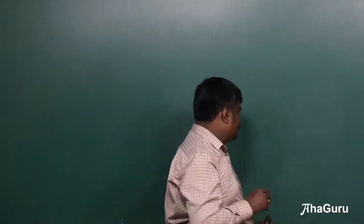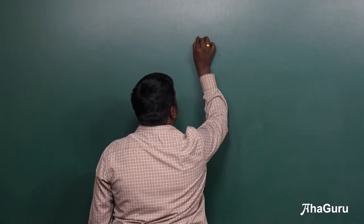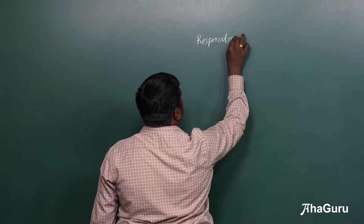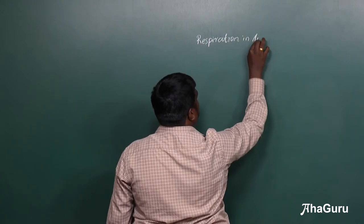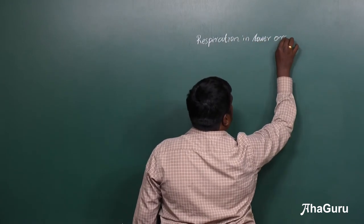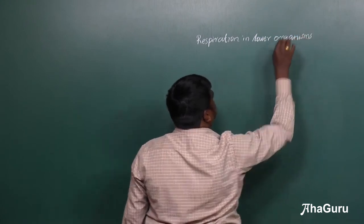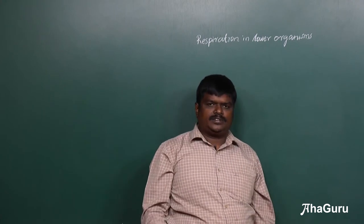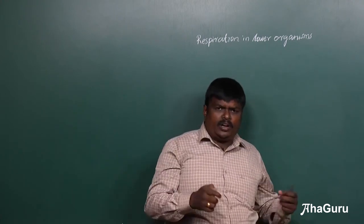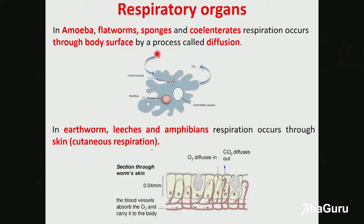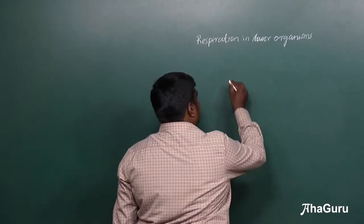Respiration in lower organisms. In lower organisms like amoeba, flatworms, sponges, and coelenterates, respiration occurs through their body surface. For example, consider an amoeba.